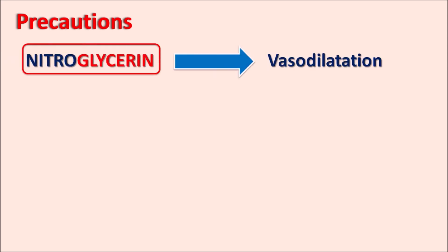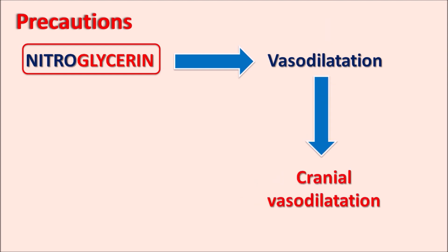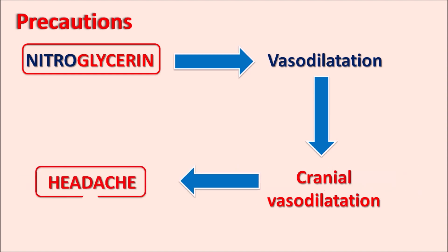Similarly, nitroglycerin produces vasodilatation both peripherally as well as centrally. Nitroglycerin can produce some cranial vasodilatation, and because of this, it can cause throbbing headache in the patients. Headache is one of the important symptoms that can be observed with nitroglycerin due to cranial vasodilatation, and this headache is increased with an increased dose. That is why this drug should be used at a low dose and possibly for a shorter duration, otherwise it can produce throbbing headache in the patients.